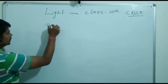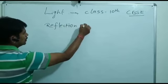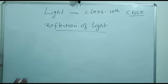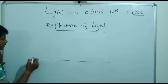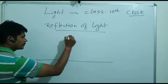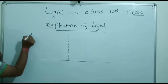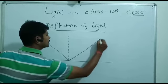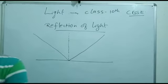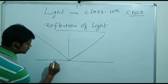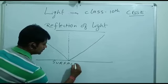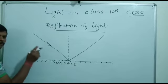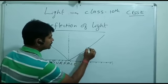What is reflection of light? This is the surface. On this surface, if light falls at a point, what happens is the light falls on the surface and from here it is reflected back. So this is the surface, and from this surface the light falls on it and is reflected back.